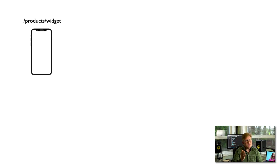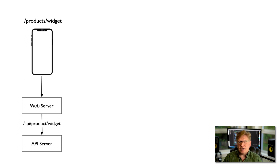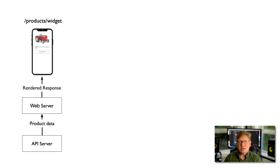That brings up the question: can we make those pages static? To understand that, we need to understand how a web server renders an HTML page. Say the customer is looking for a widget, so they go to /products/widget. That request goes to our server. The server then connects to the API, asks for the data on the widget, formats the HTML response, and sends it back to the customer fully rendered.